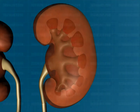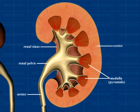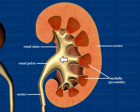A kidney consists of the renal sinus, a cavity where you can find fat, nerves, blood vessels, and the renal pelvis. The renal pelvis is a funnel-shaped part of the ureter that funnels urine flowing into the kidney. The ureter is a long tube that moves urine from the kidney to the urinary bladder.